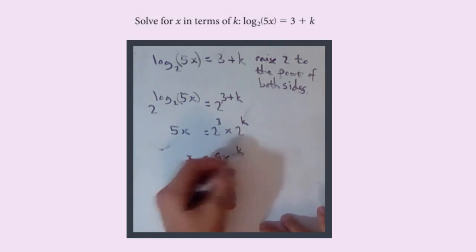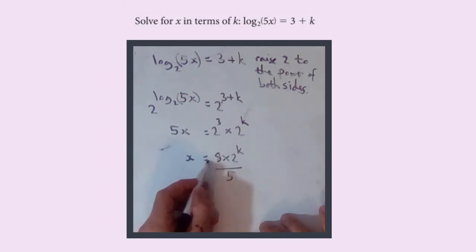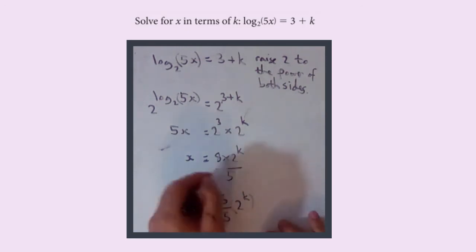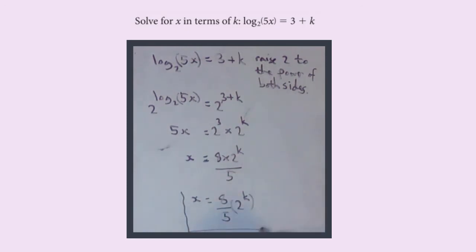Which looks okay, or you could say x equals 8 over 5 times 2 to the k. But really this is just as good and that's it. It doesn't look particularly satisfying so you might not think you're finished, but we are definitely finished.